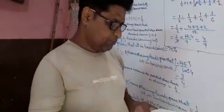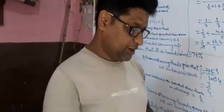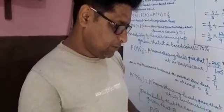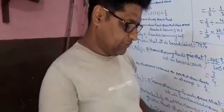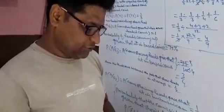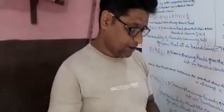An insurance company insured 2,000 scooter drivers, 4,000 car drivers, and 6,000 truck drivers. The probabilities of an accident are 0.01, 0.03, and 0.15 respectively. One of the insured persons meets with an accident. What is the probability that he is a scooter driver?